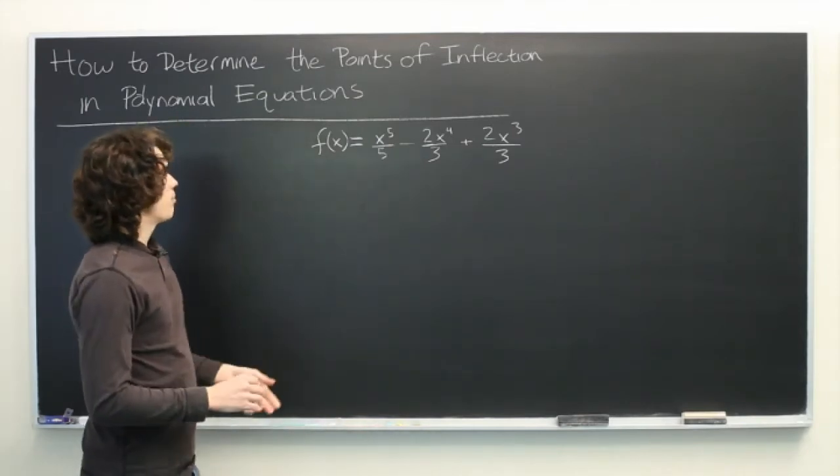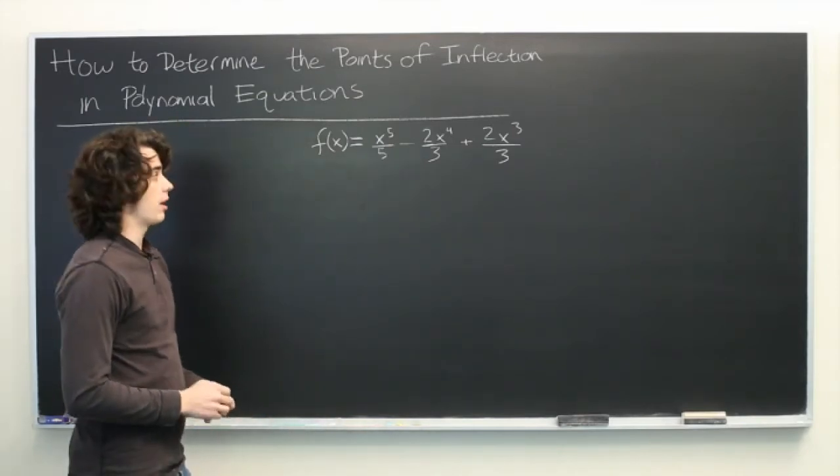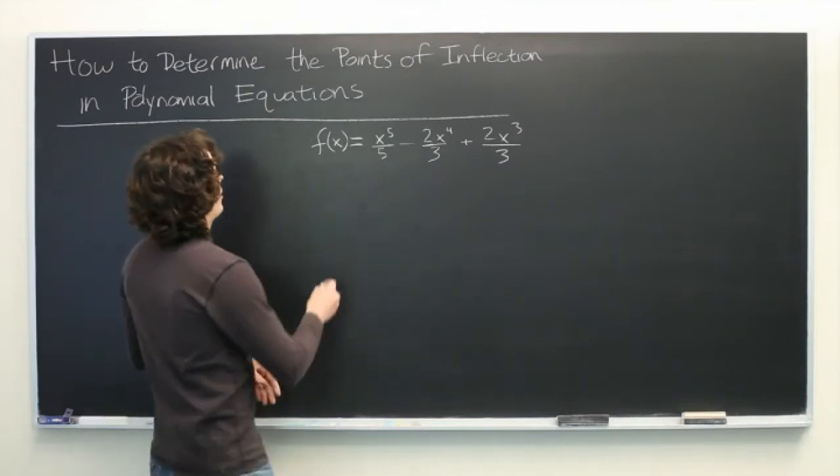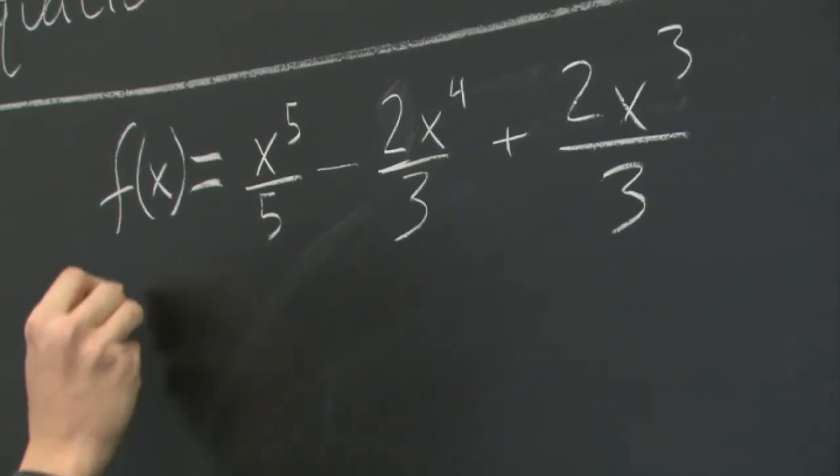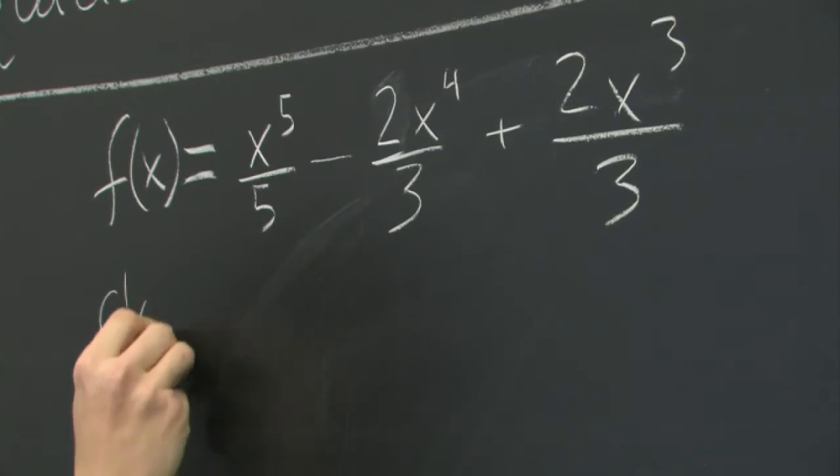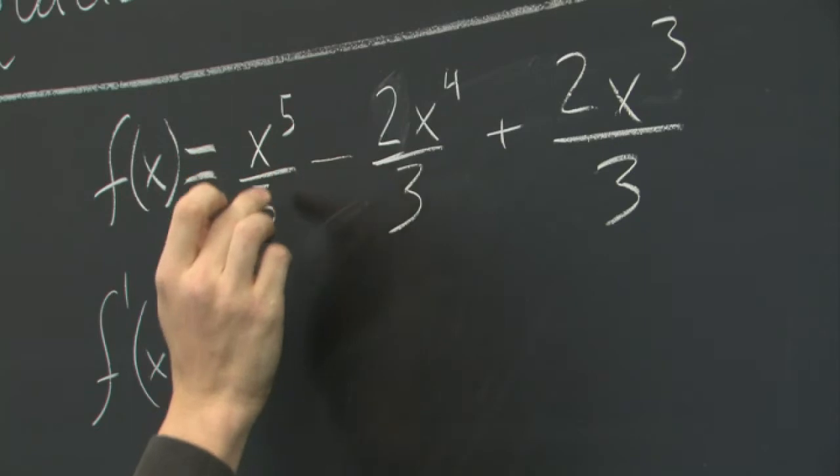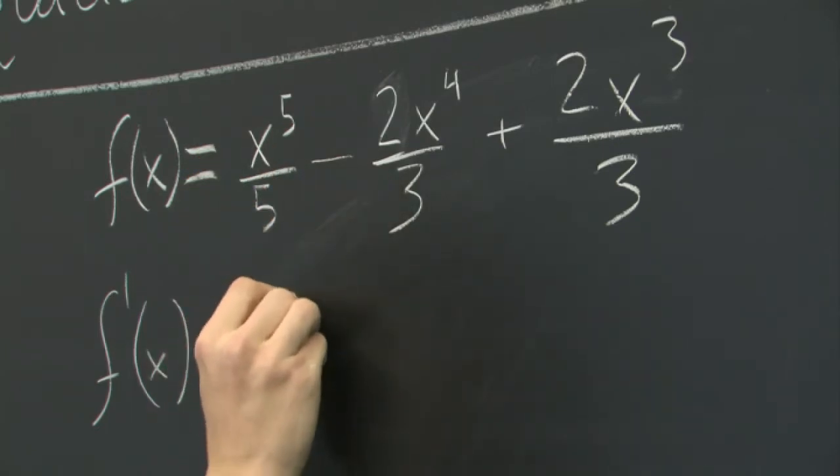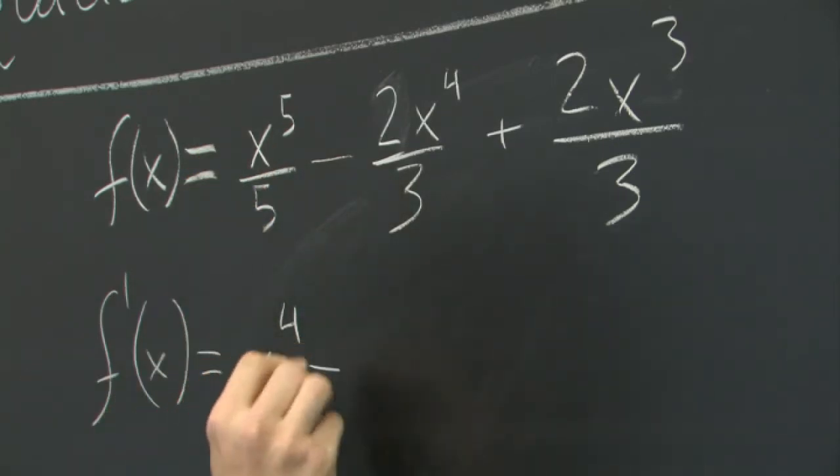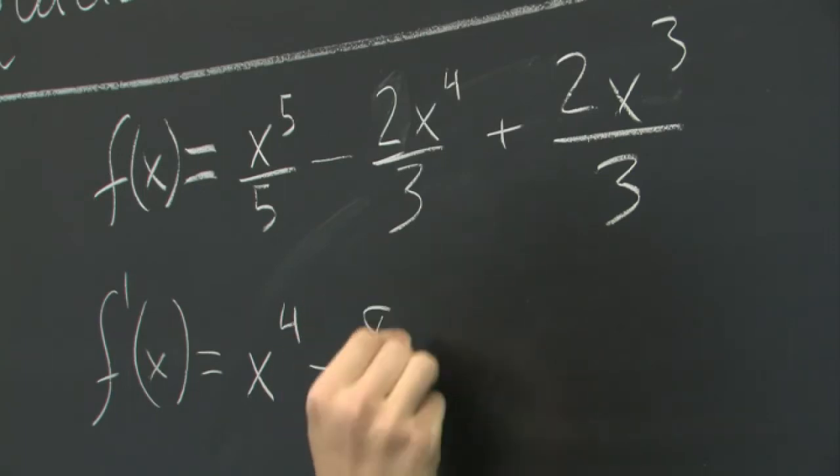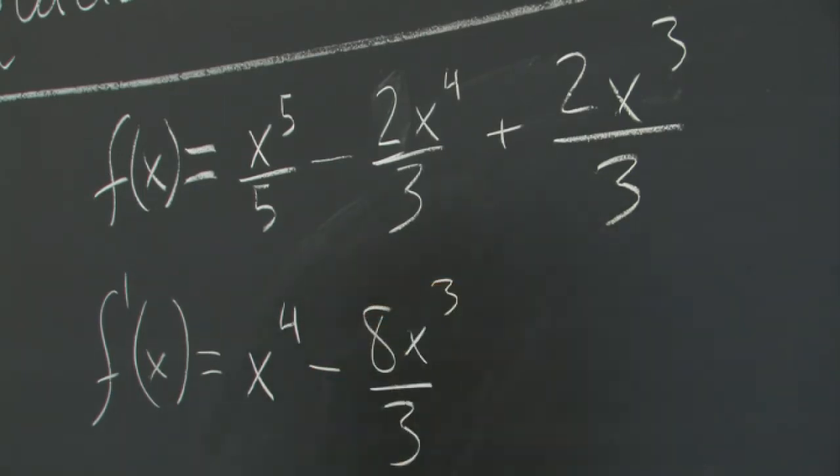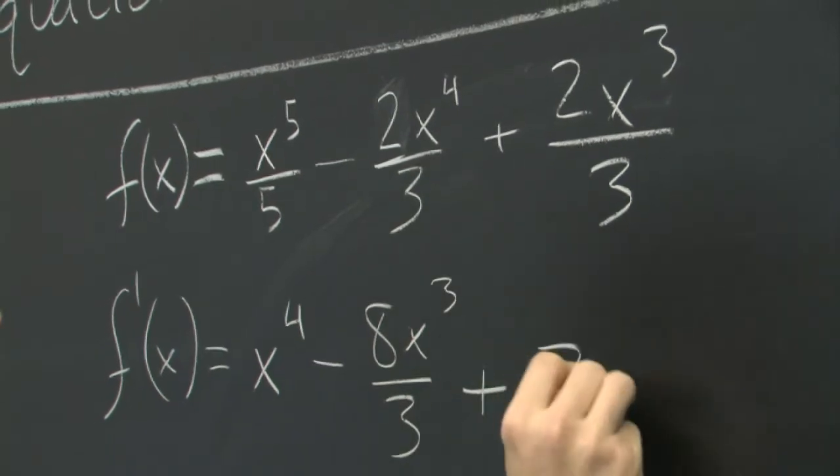Since finding the point of inflection requires knowledge of the second derivative, let's go ahead and find that. First, we'll take the first derivative. Five times five, we get x^4 - (8/3)x^3 + 2x^2.